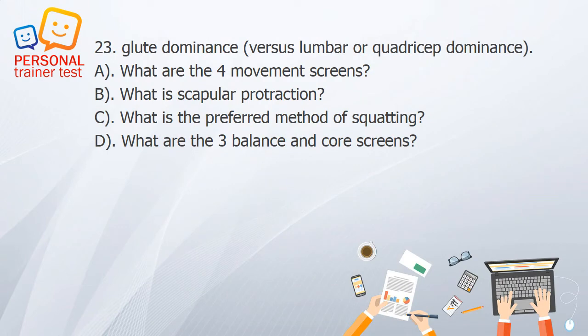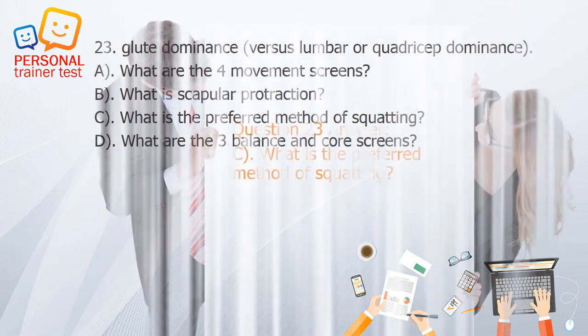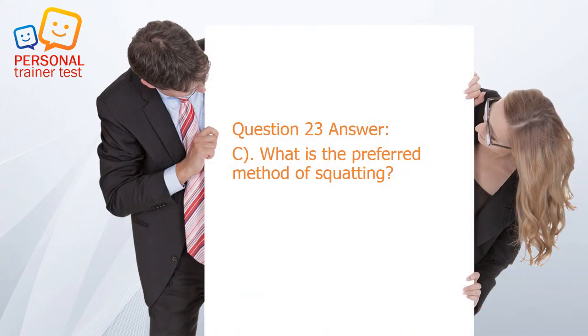Question 23. A. What are the four movement screens? B. What is scapular protraction? C. What is the preferred method of squatting? D. What are the three balance and core screens? Answer: C. Glute dominance versus lumbar or quadricep dominance — that is the preferred method of squatting.